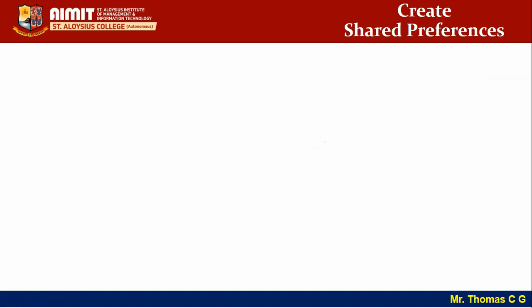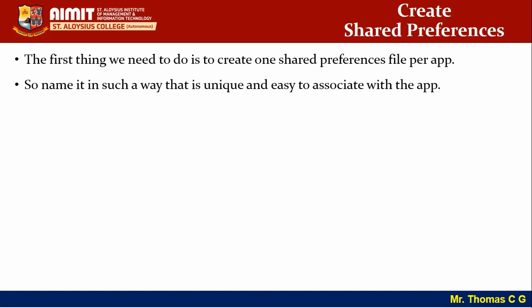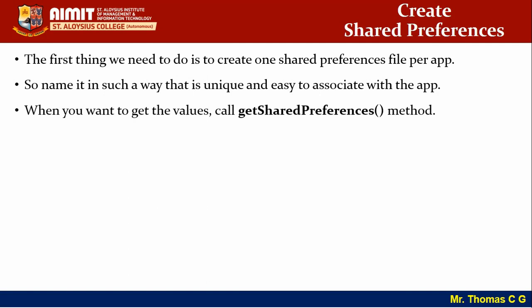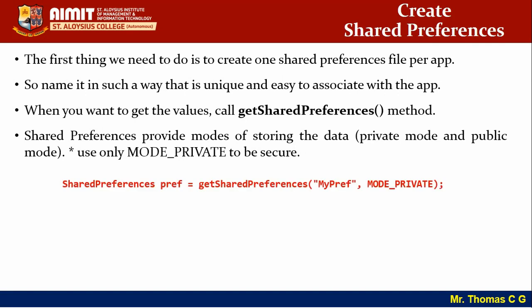Now for the technical part: create one shared preferences file per app — one preferences file is recommended, don't create more than one. You can store many name-value pairs in that one file. To get the shared preferences, use context.getSharedPreferences(). If calling it in your main activity, just use getSharedPreferences and pass two parameters: the file name and the mode. Always use MODE_PRIVATE to be secure.